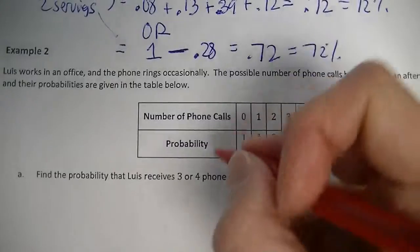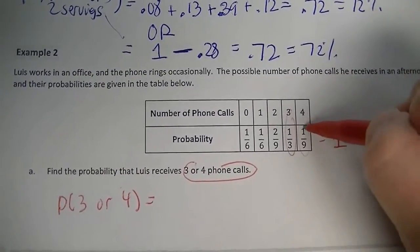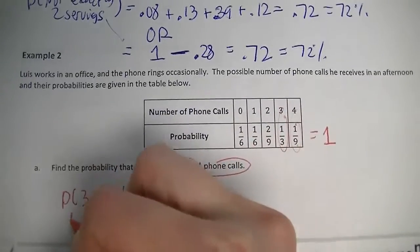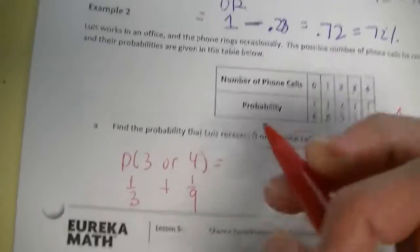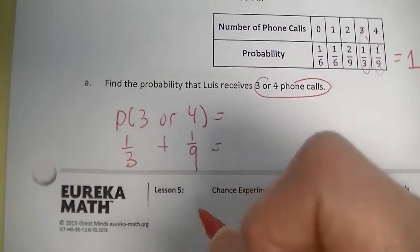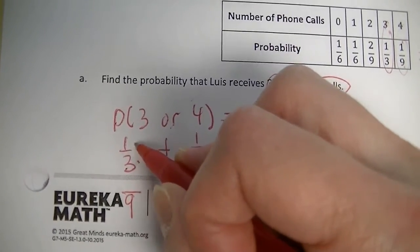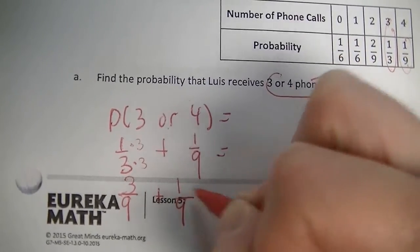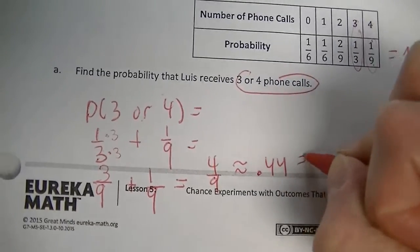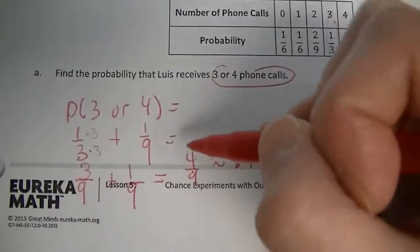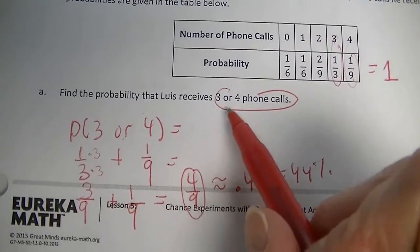Find the probability that Luis receives three or four phone calls. Three calls is one-third and four calls is one-ninth. 'Or' in probability means add. They don't share a common denominator, but both go into nine: one-third becomes three-ninths, plus one-ninth equals four-ninths. Four divided by nine is approximately 0.44, about forty-four percent. When you get a repeating decimal, it's best to keep it as a fraction — so four-ninths is the answer.